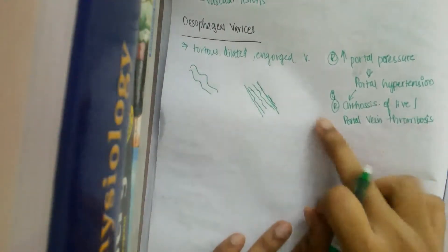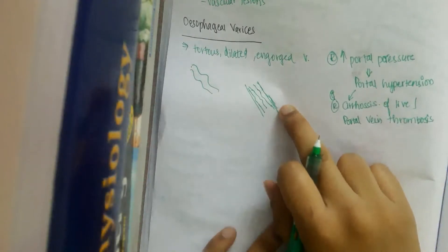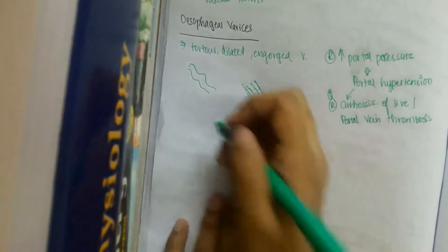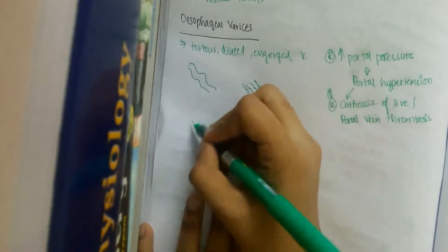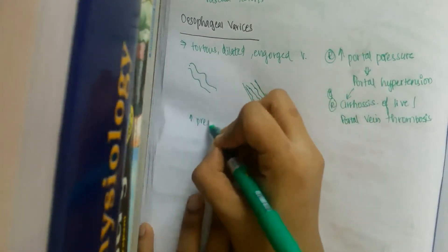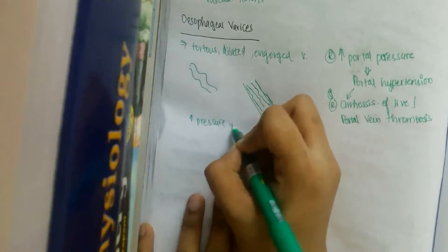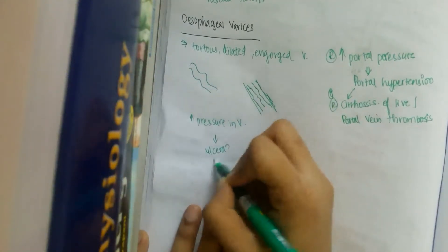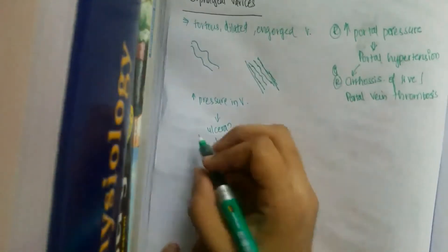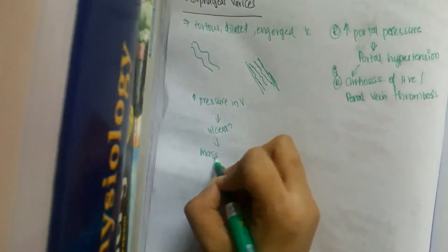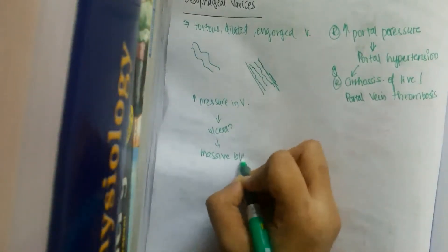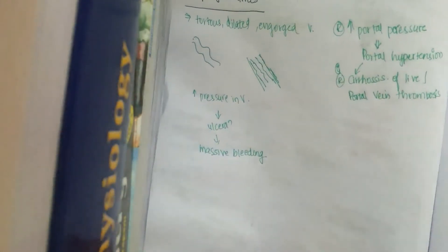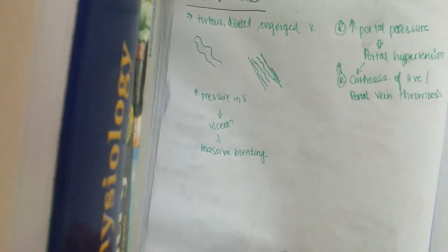These lesions are due to portal blood vessels which are engorged. Whenever there is increased venous pressure — increased pressure in these veins — it leads to ulceration, and that ulceration leads to massive bleeding.